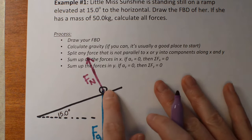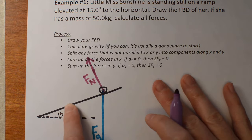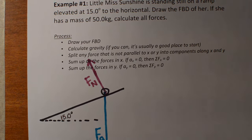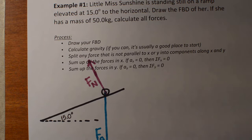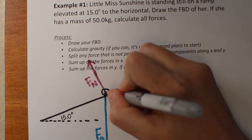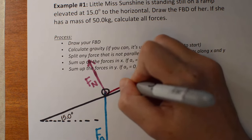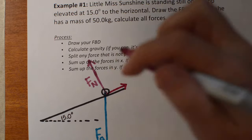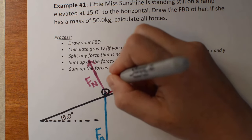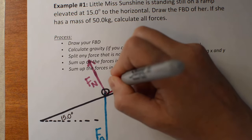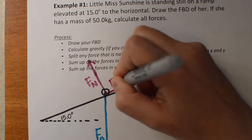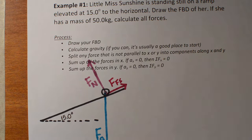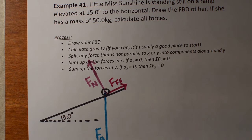The reason why she doesn't slide down the hill is there's a static friction force. Because she's still and not moving anywhere, this is a static friction force — it's not kinetic friction because she's not sliding. That one is what holds her on the hill. So Ffs is her static friction force.